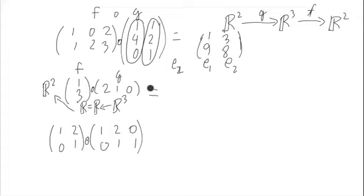So let's start off by seeing what we need. We need a matrix that has three columns for the domain and two rows for the codomain. So it's going to look something like 3 and 2.